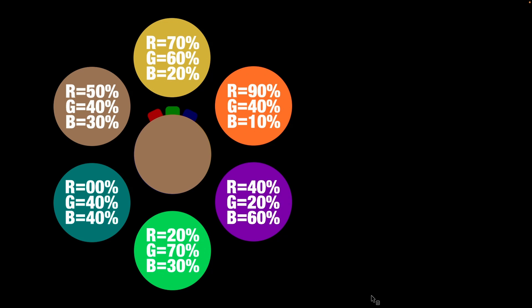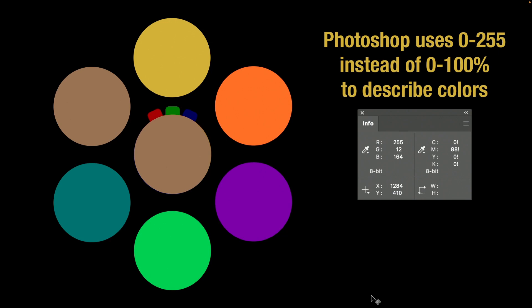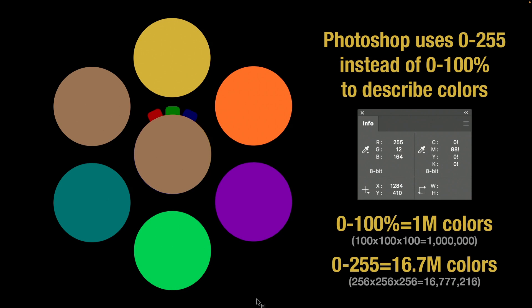When working in Photoshop, we don't use percentages — we use numbers from 0 to 255. Using percentages gives you only about 101 choices and roughly one million possible colors. But using 0 to 255 gives you 256 choices per channel and up to 16.7 million unique colors. That's why Photoshop uses 0 to 255 numbers — to define a wider range of colors.